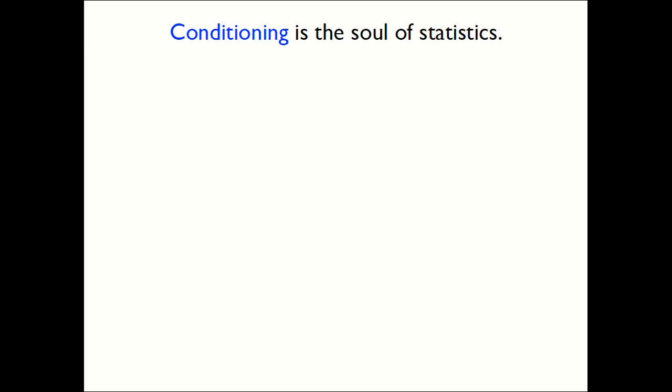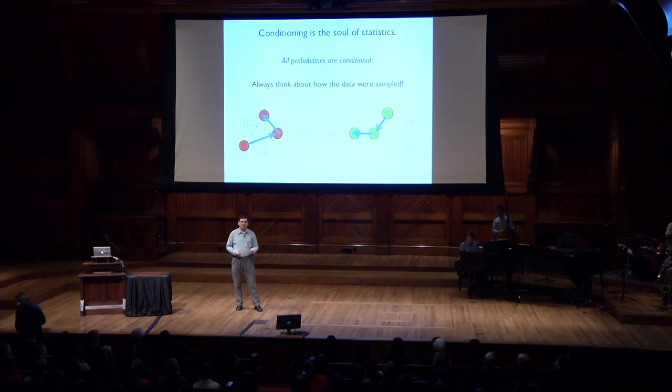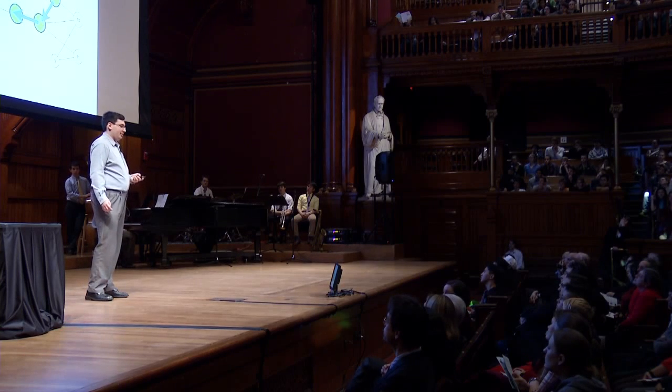Now we're ready to say what the soul of statistics is. I won't keep you in suspense. Conditioning is the soul of statistics. That means conditional probability. If you don't know what conditional probability is, all it means is that we're given information — everything is conditional on the information that we have. Conditional probability tells us how to update our beliefs based on information we're able to observe. Every probability is conditional. Whenever you have a dataset, you want to think about how it was sampled. A lot of work on networks ignores where the network came from and how it was sampled, which can lead to very misleading answers if you're not careful about what you're conditioning on.